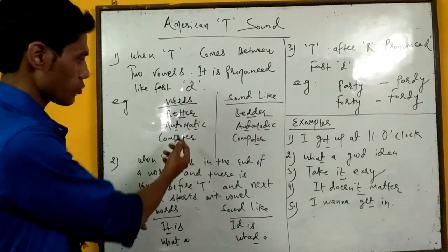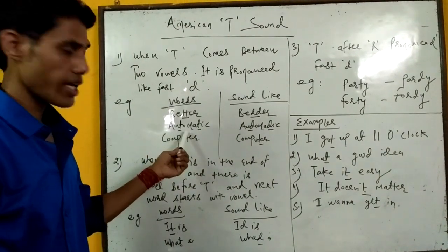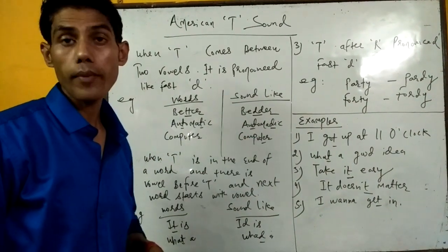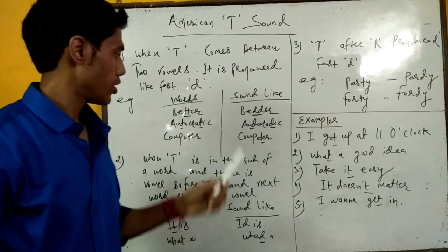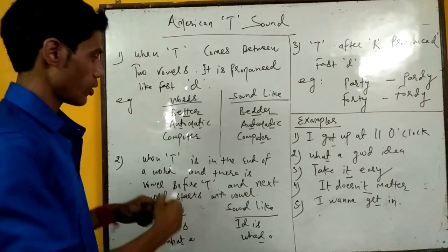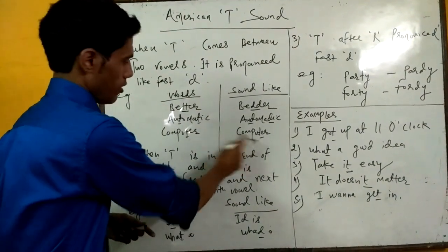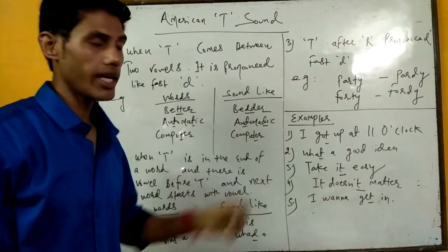This word here, the next one. T once again between two vowels. It is pronounced like automatic. And this word, this T once again here between two vowels, is pronounced like computer.